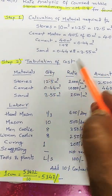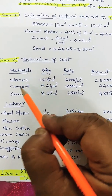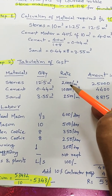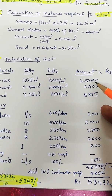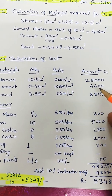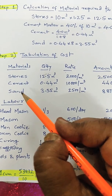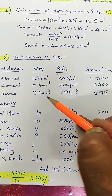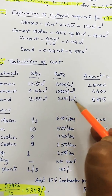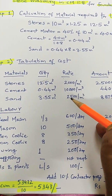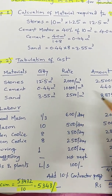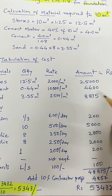Tabulation of materials: Stones — 12.5 m³ at a rate of ₹2,000 per m³ amounts to ₹25,000. Cement — 0.44 m³ at ₹10,000 per m³ amounts to ₹4,400. Sand — 3.55 m³ at ₹2,500 per m³ (lower quality sand is used for stone masonry, otherwise it could be ₹3,000–₹3,500) amounts to ₹8,875.